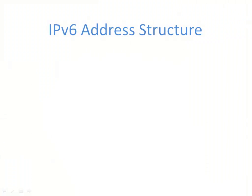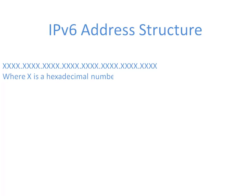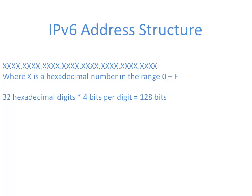Let's look at the address structure of IPv6. While IPv4 was a 32-bit address, IPv6 is a 128-bit address, written in hexadecimal notation. A hexadecimal digit is in the range of 0 through F — counting 0, 1, 2, 3, 4, 5, 6, 7, 8, 9, A, B, C, D, E, F — giving 16 possible values. Since 2 to the 4th power is 16, each hexadecimal digit represents 4 bits. We have 32 hexadecimal digits, 4 bits each: 32 times 4 equals 128 bits, giving us a 128-bit IPv6 address.